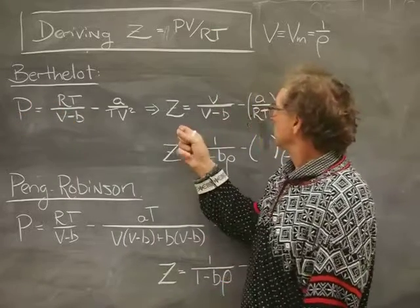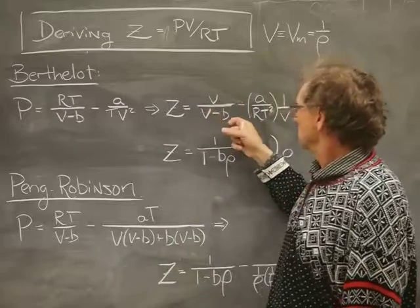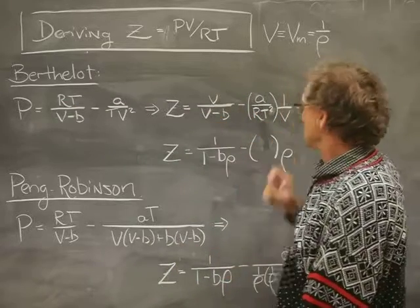and divide by RT. When you do that, the RTs cancel, the volumes line up, and so on.